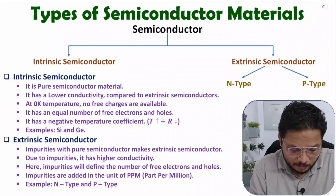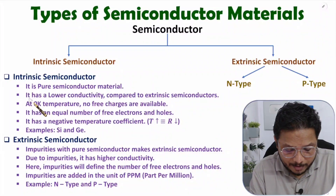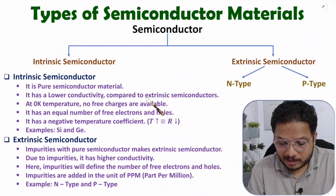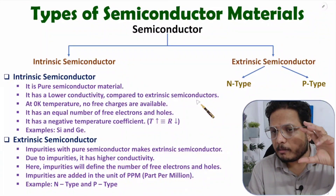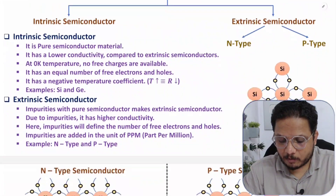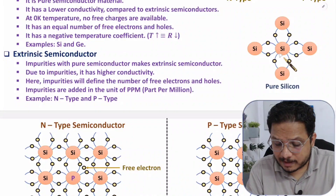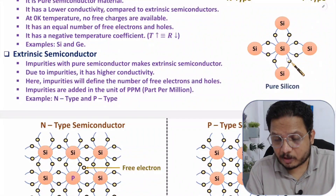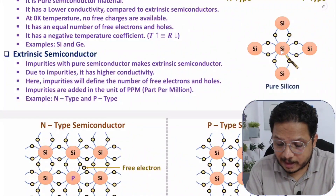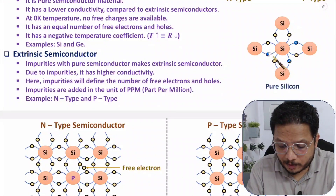With intrinsic semiconductor material we have pure semiconductor material, and you need to understand that pure semiconductor material will have lower conductivity compared to extrinsic semiconductor material. To understand what pure semiconductor material is, take the example of silicon. Silicon is a pure semiconductor material — in silicon, its outer orbit has four electrons, and those four electrons are connected with their neighbor atoms.